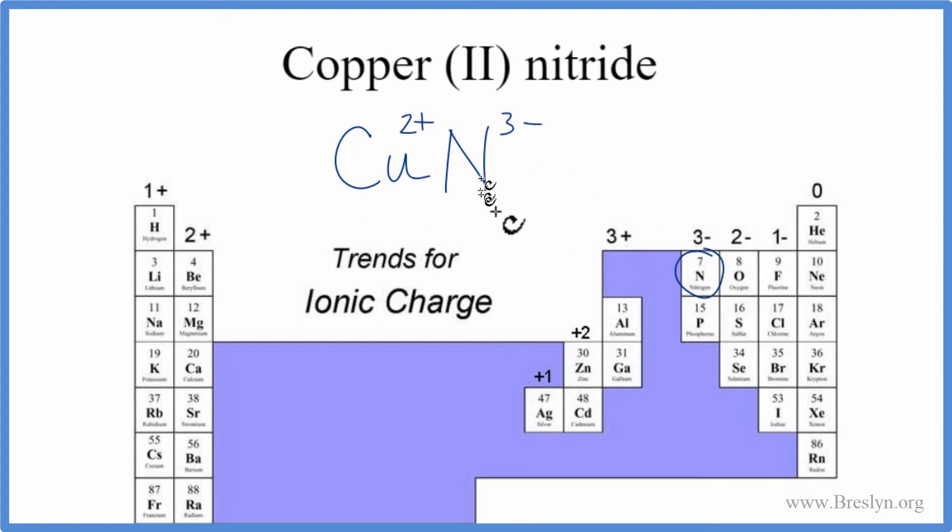So we have the charges, but this isn't the correct formula because these charges need to add up to zero, to have a net charge of zero, since copper (II) nitride is a neutral compound. We can use a trick though to help us do that - it's called the crisscross method. Take the 2, put it here, and the 3 over here, get rid of these charges, and that's the formula for copper (II) nitride: Cu₃N₂.